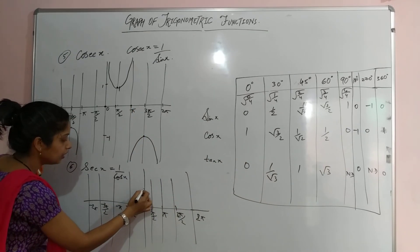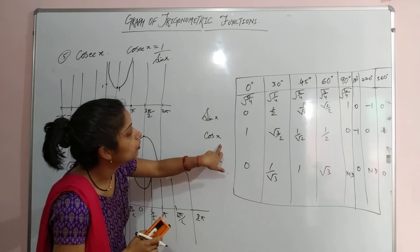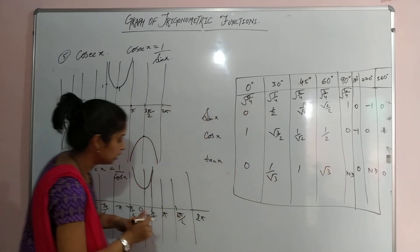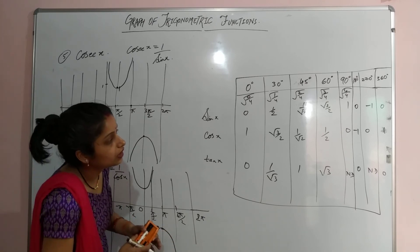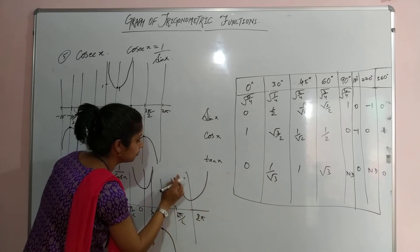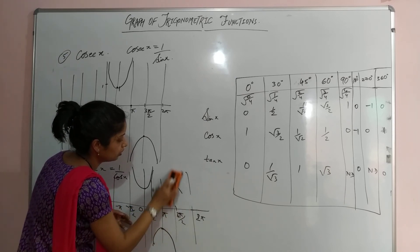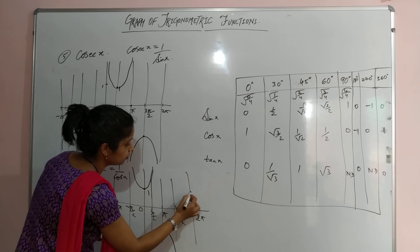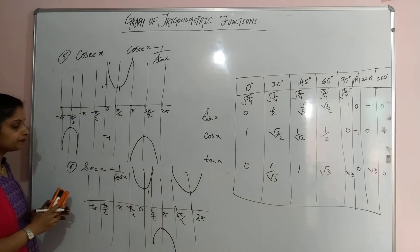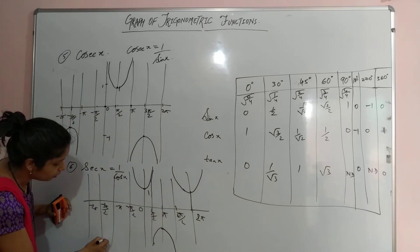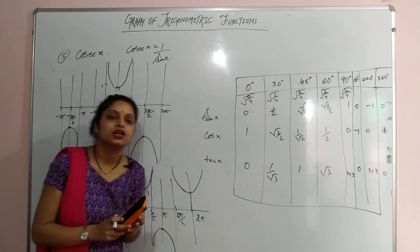At 0, cos is 1 so sec is 1 — the graph starts at 1. At 180° (π), cos is −1 so sec is −1 — the graph goes to −1. At 2π, it is again 1. Draw the curve accordingly, making it symmetric on the negative side as well. These are all the ways how to draw a graph of a trigonometric function. Thank you so much.